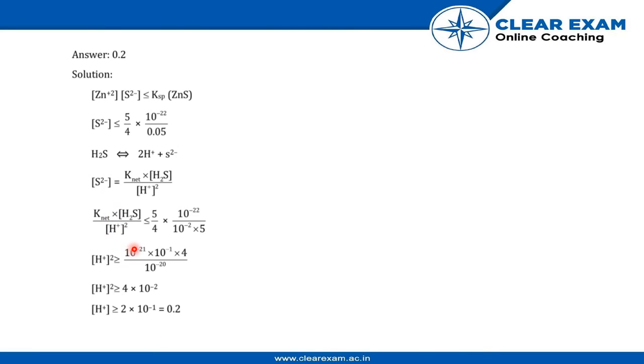So we get that Knet × [H₂S] / [H⁺]² is greater than 5/4 × 10⁻²⁸ divided by 10⁻² × 5. So by solving it, [H⁺] is greater than or equal to 2 × 10⁻¹, that is 0.2.